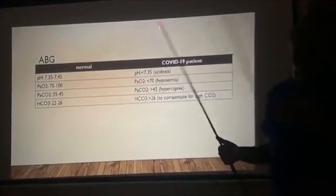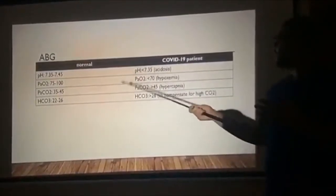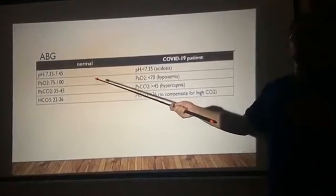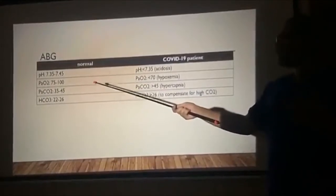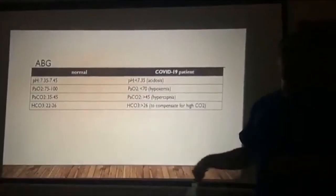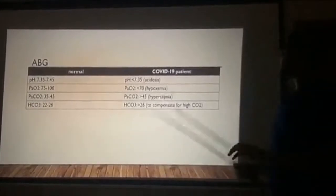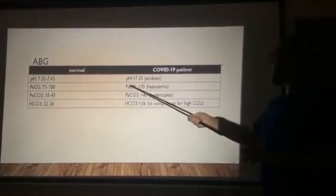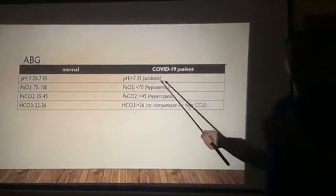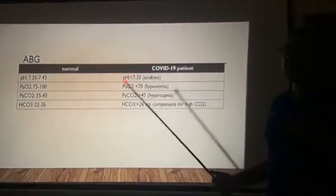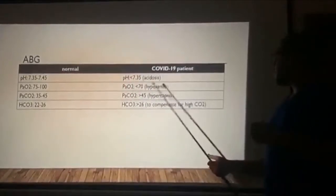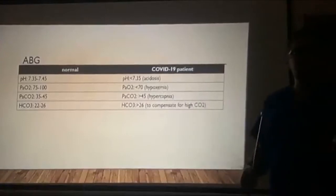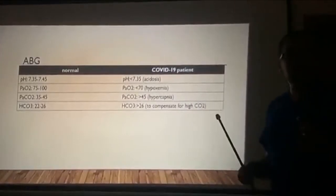What ABG should we expect from a COVID-19 patient? Normally, pH is 7.35–7.45, PaO2 is 75–100, CO2 is 35–45, and bicarbonate is 22–26. In COVID-19 patients, the pH will be on the acidic side — less than 7.35. PaO2 will reveal hypoxemia, so less than 70. CO2 will reveal hypercapnia, so more than 45. Bicarbonate will be more than 26 to compensate for the high CO2 and respiratory acidosis. So COVID-19 patients will have respiratory acidosis with hypoxemia.